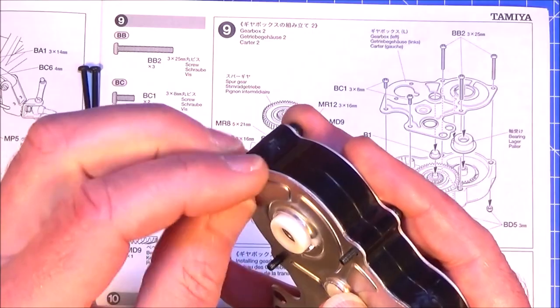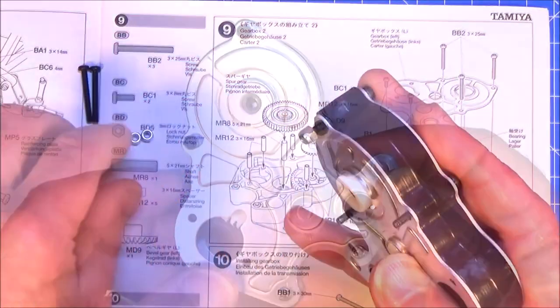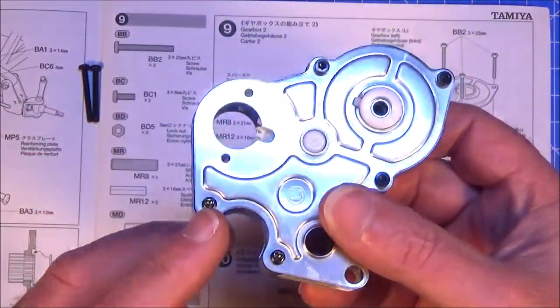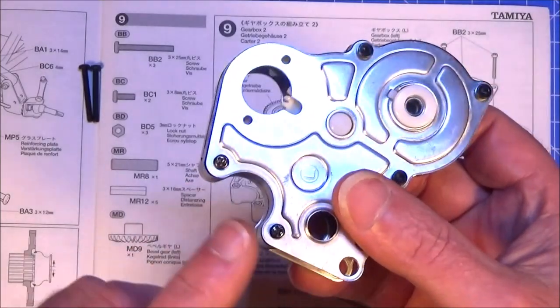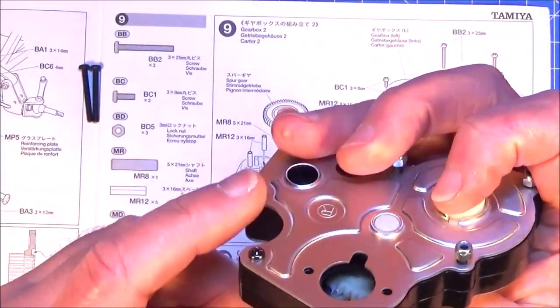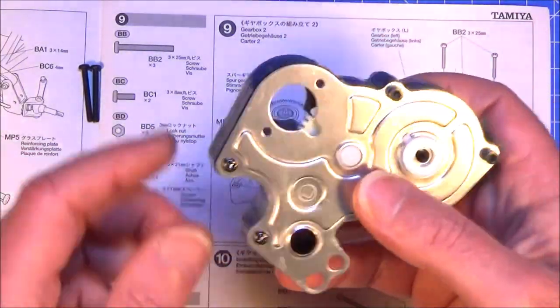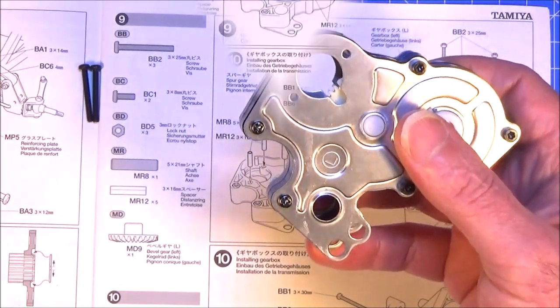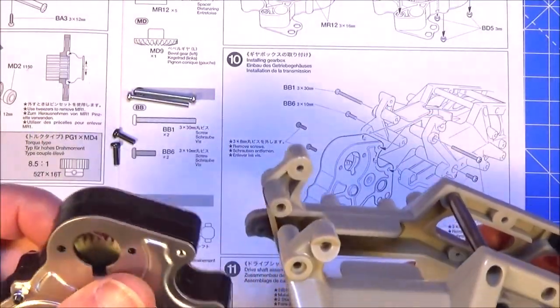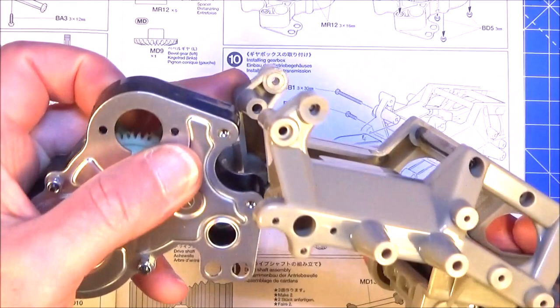So they'll do instead and we just hold them on the other side with three nylock nuts. And I just looked at the next step which is step 10 where we're going to fit this and guess what we're going to have to take out those 3x8 screws I've just put in. So anyway let's get on with that.